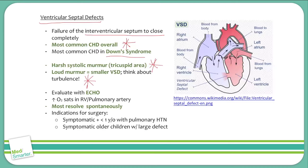Echo is the gold standard for workup. Similarly to ASD, you have oxygenated blood flowing from the left side of the heart to the right side, resulting in increased O2 saturation in the right ventricle and pulmonary artery. Most VSDs will resolve spontaneously and have the same indications for surgery as ASD.